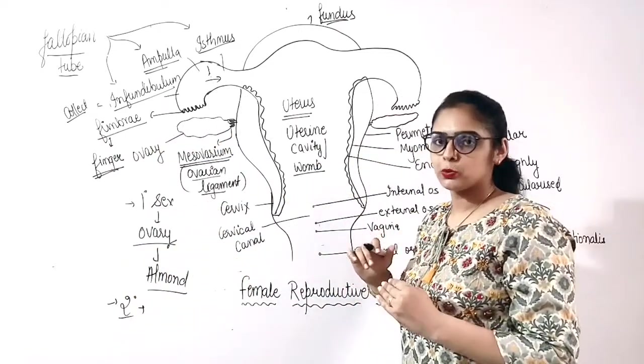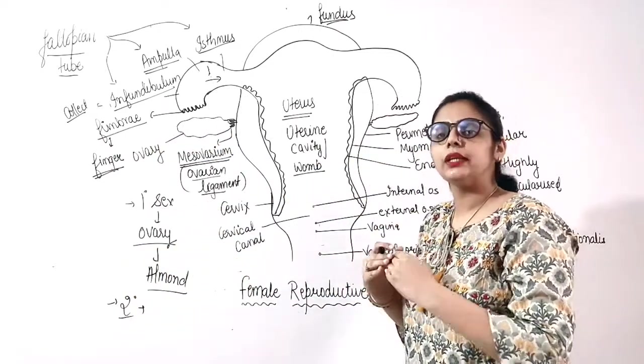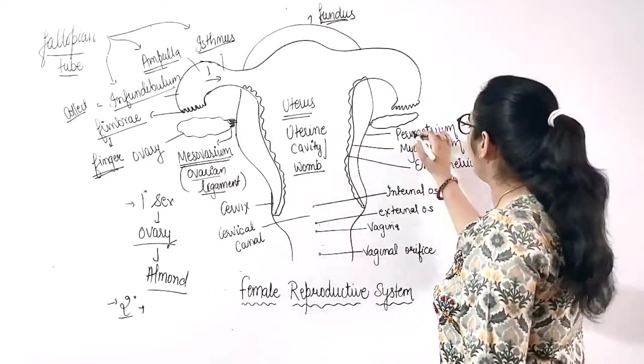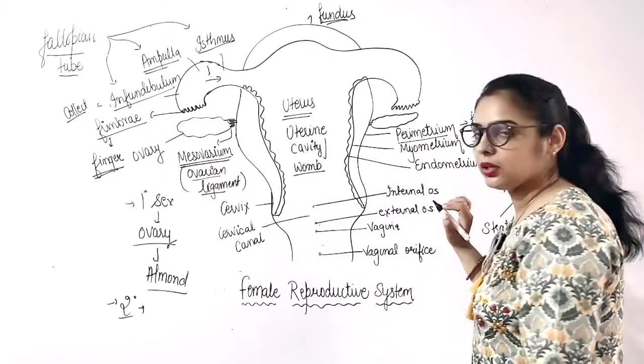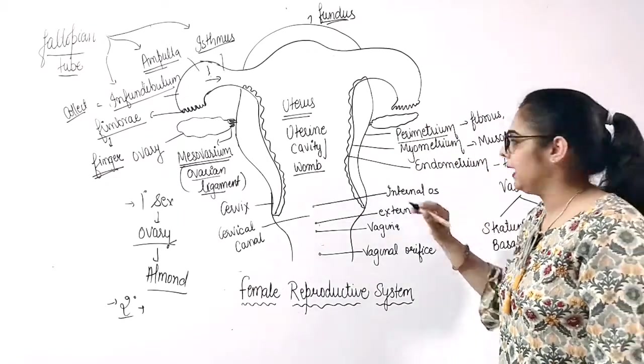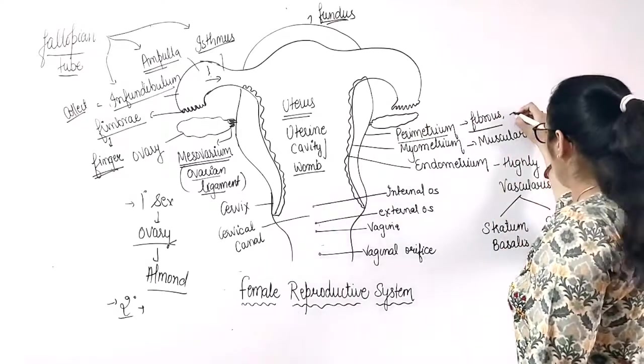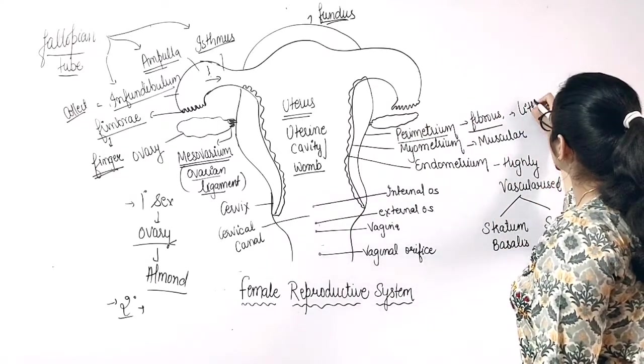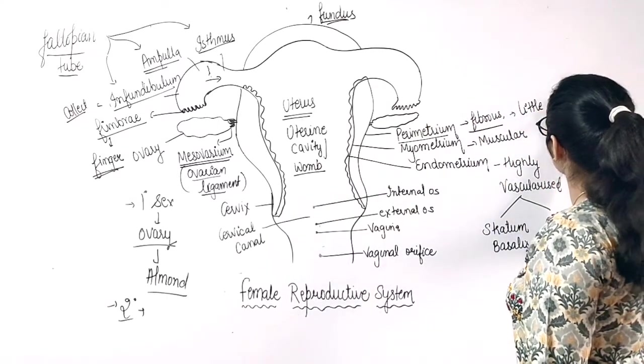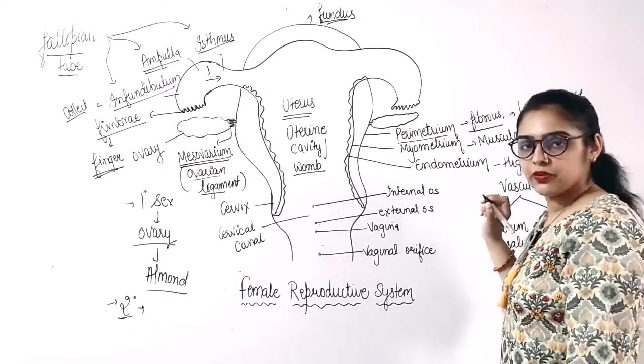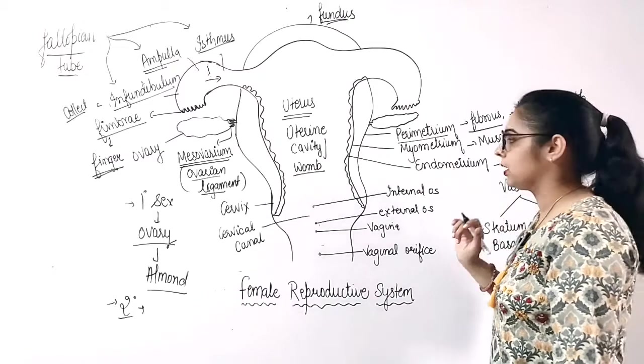Three uterine walls are present, meaning uterus has three layers, three walls. The outer one is perimetrium. Outer is perimetrium, which is fibrous and provides some strength. Fibrous outer membrane is fibrous and known as the perimetrium.